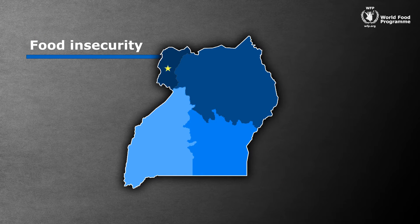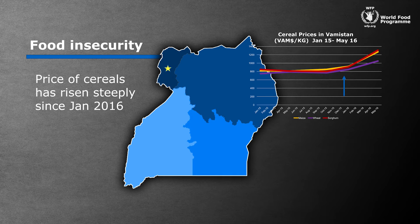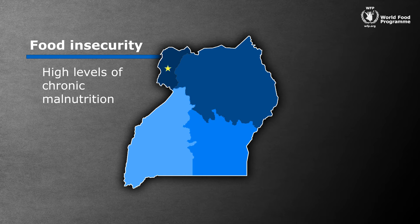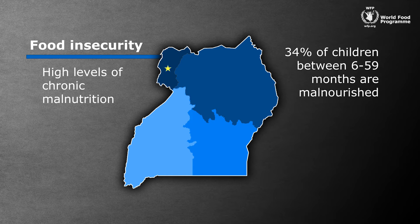Poverty, unemployment, dependence on subsistence agriculture and food price fluctuations drive food insecurity in Vamistan, which relies heavily on food imports. In fact, the price of cereals has risen steeply since January 2016. But Vamistan's well-developed markets provide opportunities to deliver food assistance through various transfer modalities. The poor, women and children and refugees are most at risk of food insecurity. Moreover, Vamistan has high levels of chronic malnutrition — 34% of children aged between 6 and 59 months are malnourished.